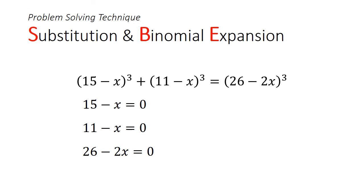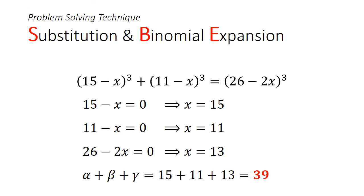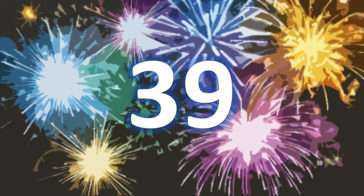This translates to either (15-x) equals 0, (11-x) equals 0, or (26-2x) equals 0. That tells us that the three roots are 11, 13, and 15. Hence the sum of the roots must be 39. So, did you get the answer?